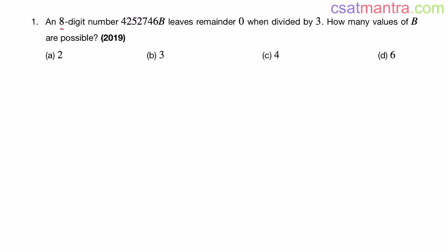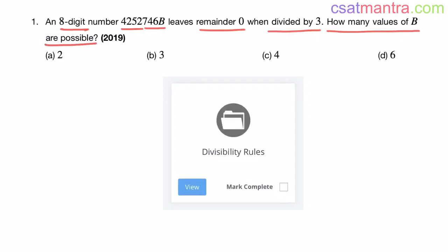An 8-digit number 4252746B leaves remainder 0 when divided by 3. How many values of B are possible? This question is based on divisibility rules from number system chapter, asked in 2019.